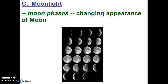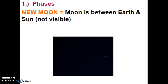Because of the positions of the Sun, Moon, and Earth, we see the Moon phases — the changing appearance of the Moon throughout its lunar cycle, which lasts about 30 days. A new Moon is when the Moon is between the Earth and the Sun and is not visible to our view, however it is still there.